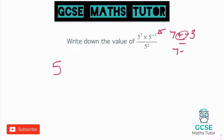So we've got seven take away three, and seven take away three is four. So on the top I'm going to have five to the power of four. When you've got negative powers, don't forget just to write it out as a little sum to the side so you can see what's going on and take that out of your head.